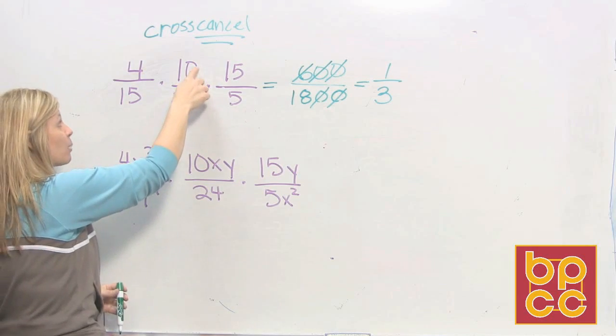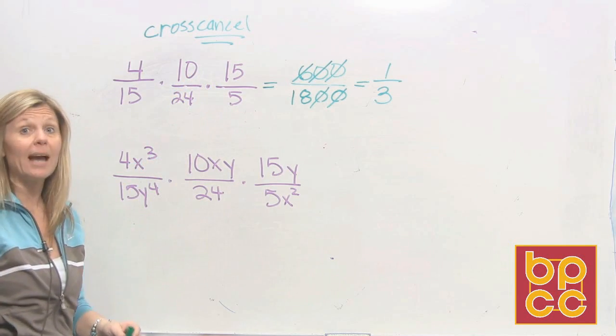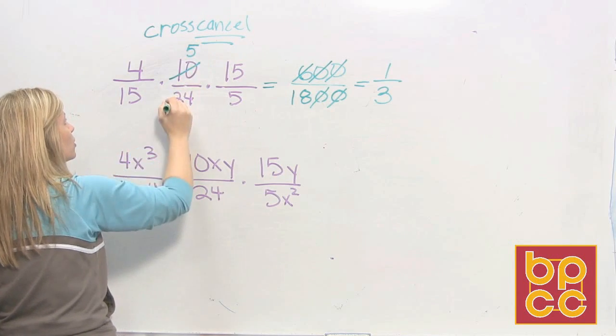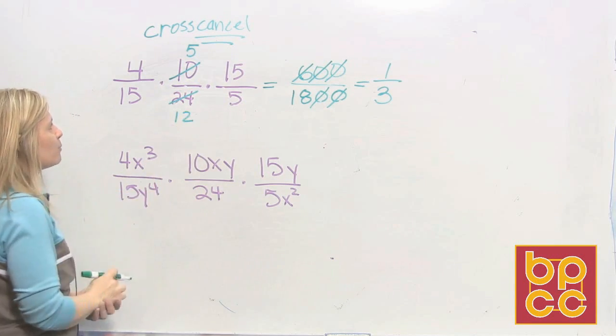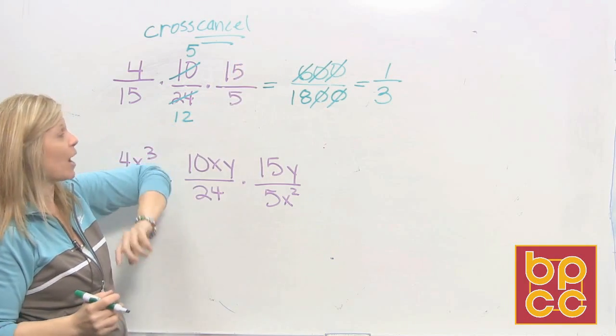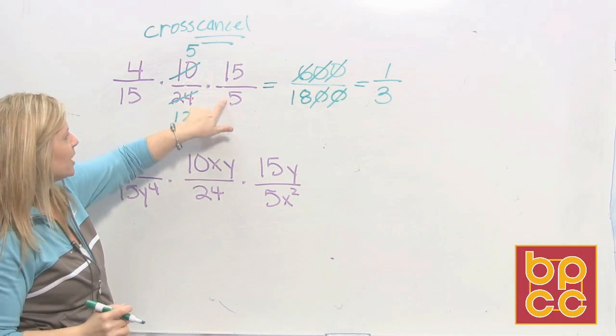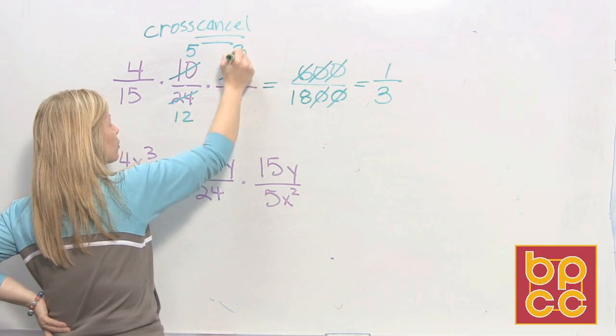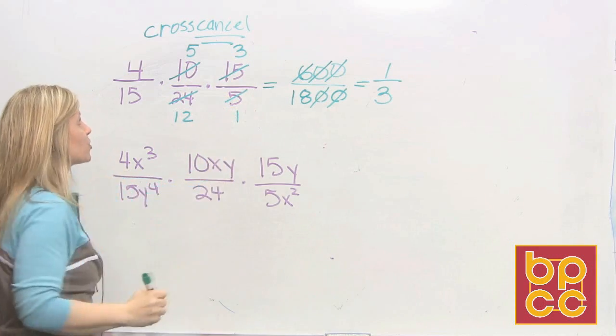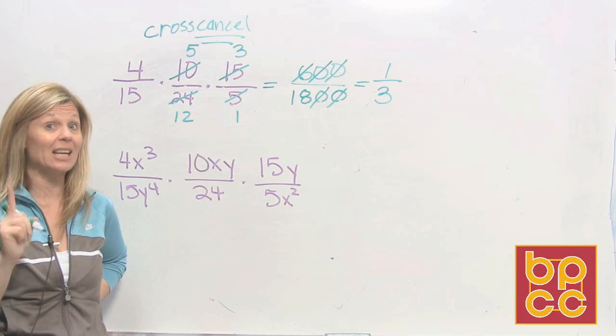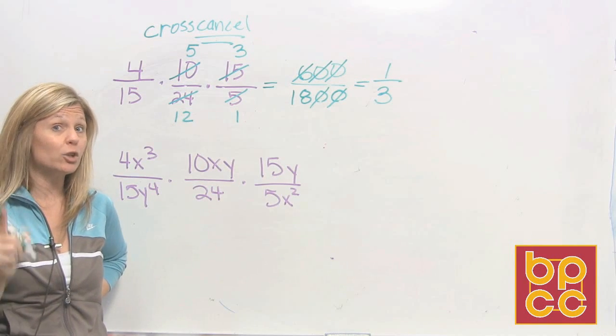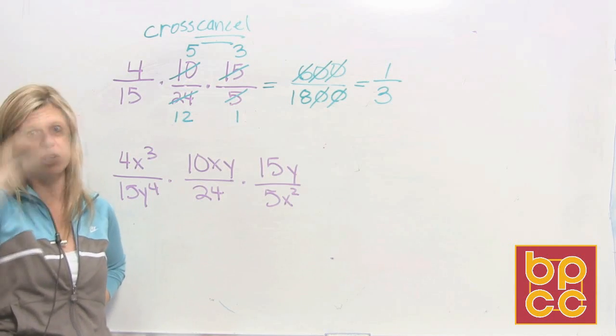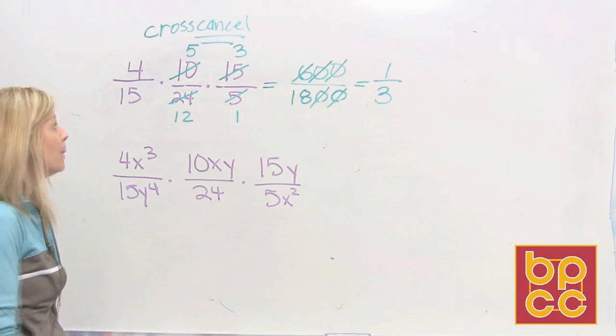Can we divide 10 and 24? Sure we can. We can divide them both by 2. 2 goes into 10 five times. 2 goes into 24 twelve times. We come to this third fraction. Can we divide 15 and 5 by the same number? Sure we can, 5. 5 goes into 15 three times. 5 goes into 5 once. So the first thing is canceling is just doing division. Secondly to do division, one number's got to be in the numerator, one number's got to be in the denominator.